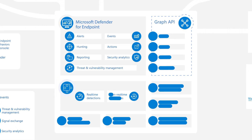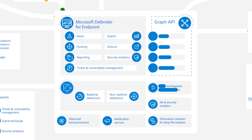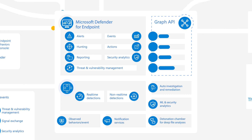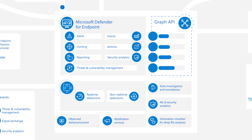Within each tenant is a Rich Behavioral Indicators of Attack, or IOA dictionary. This includes heuristics, behavioral rules, machine learning, and anomaly detection algorithms that detect suspicious, attack-related events in the sensor data. Further, Defender for Endpoint uses big data, machine learning, unique optics into the Windows ecosystem, and the intelligent security graph to translate behavioral signals into actionable insight, detections, and recommended actions.